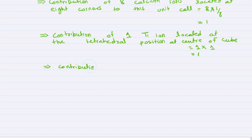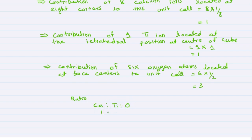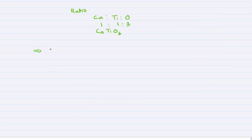The contribution of six oxygen atoms located at the face centers to the unit cell is equal to six multiplied by one-half, because the contribution of a face atom is half — it is shared by two unit cells. So the ratio of calcium to titanium to oxygen is 1:1:3, giving us calcium titanate CaTiO3.